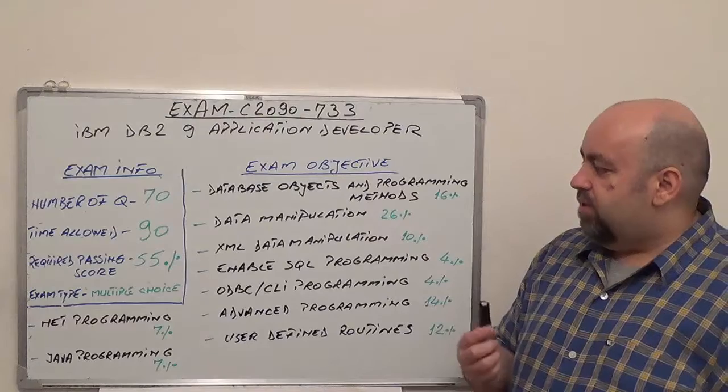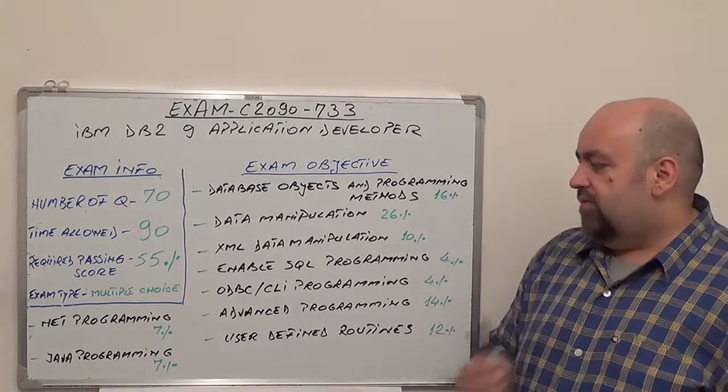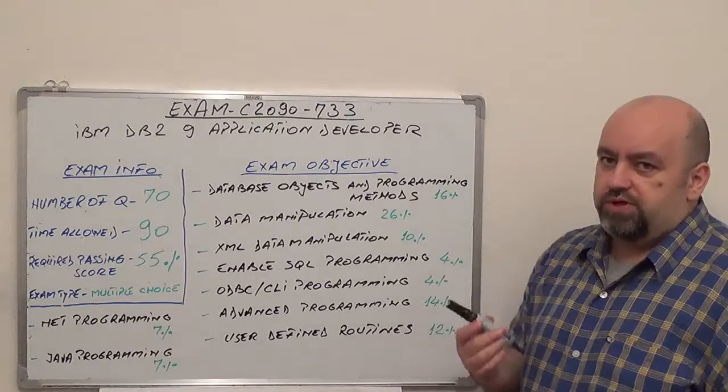The first one is .NET Programming, with 7% from total of questions. The second one is Java Programming, 7% from total of questions.